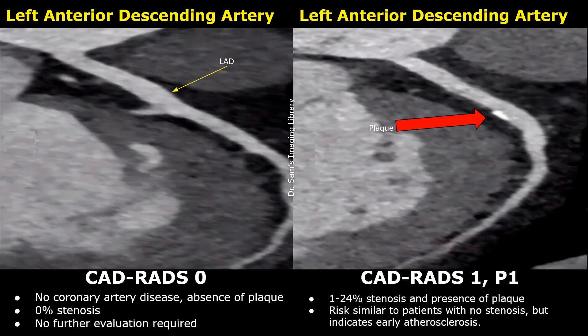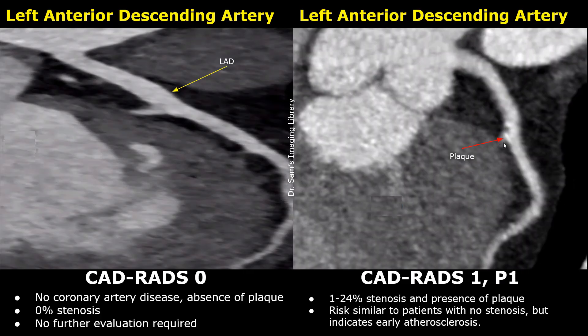Now we will be focusing on CADRADS-1 cases. This is another case showing early atherosclerosis. We can see a small hyperdense calcified plaque in the left anterior descending artery. The narrowing is around one-fourth of the lumen, less than 25%, and other arteries were normal, so it is graded as CADRADS-1, P1. Here is another case of CADRADS-1, P1.